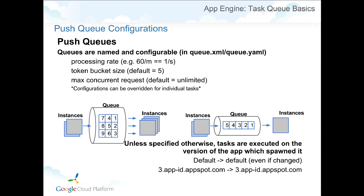Every queue you have in your system can be named and configured with parameters, for example, how frequently or fast you're going to process these tasks, or how large a token bucket is. We use a token bucket algorithm to limit how frequently or quickly we drain or process your tasks. You can have a bunch of queues with different parameters, but you also have a default queue that's already set for you, and its name is just 'default'.